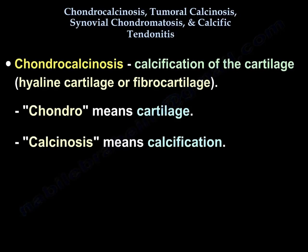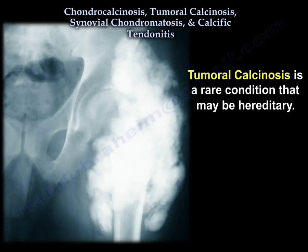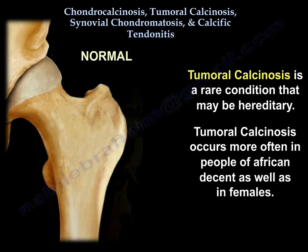Chondro means cartilage — hyaline cartilage or fibrocartilage — and calcinosis means calcification. So chondrocalcinosis means calcification of the cartilage, hyaline or fibrocartilage. It is a rare condition, may be hereditary, and can affect people of African origin.